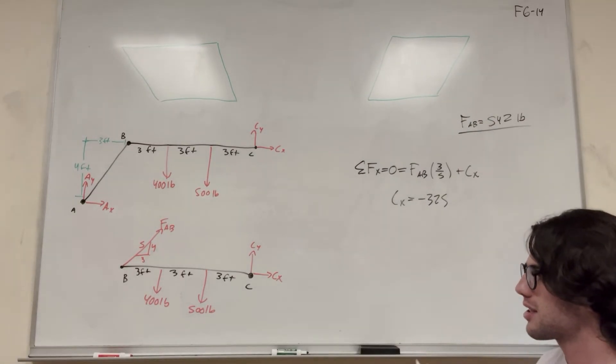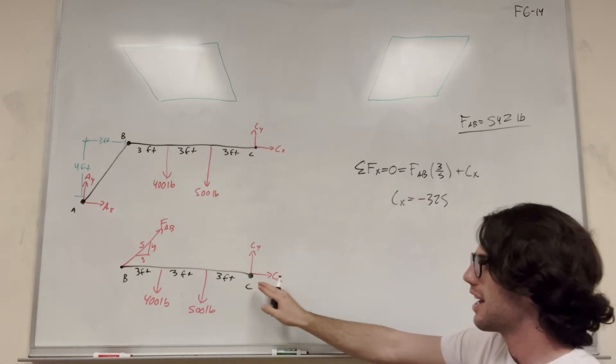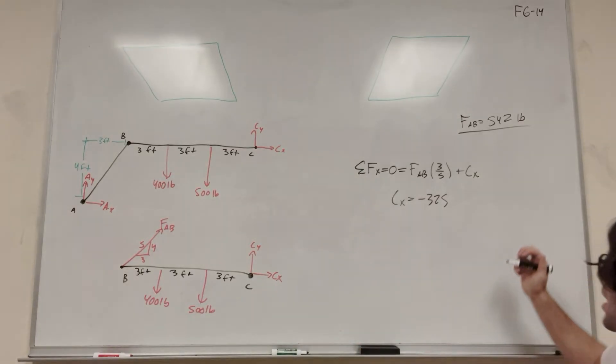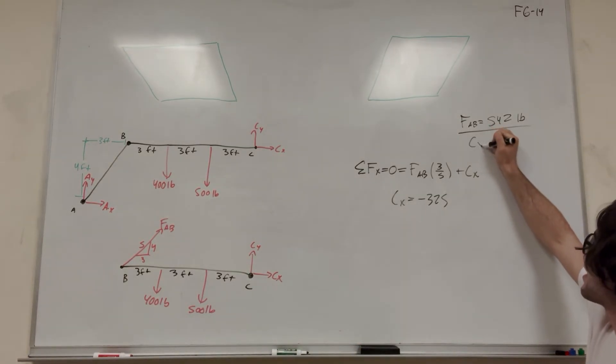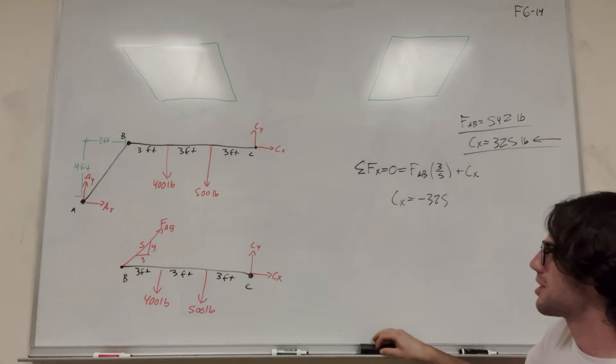So this negative number that we get tells us that C_X, we said it's pointing to the right, but it's negative, so it's actually pointing to the left. So we drew the force body diagram wrong, but it's okay. All you have to do is say, C_X is equal to 325 pounds, but it's pointing to the left.